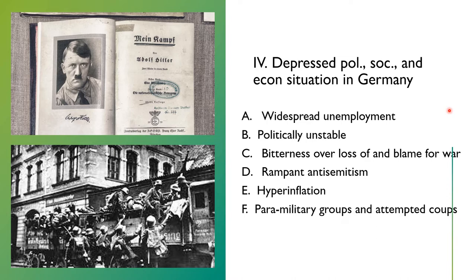In Germany, because of the Versailles Treaty, the War Guilt Clause and the reparations created a depressed political, social, and economic situation. There was widespread unemployment, which was also the case in France, Britain, and the United States. But in Germany it was a politically unstable situation — what had been an empire during the war was dismantled, and a socialist democratic government, the Weimar Republic, was established.